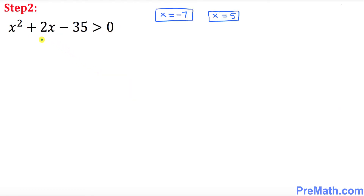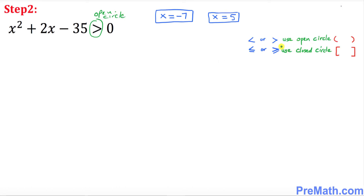In Step 2, we put back the inequality symbol. We already have these solutions, though they are not exactly solutions in the traditional sense — just see how we're going to use them. The next step: always remember, whenever you have this kind of inequality, we're going to have an open circle. Here are the basic rules to help you out.